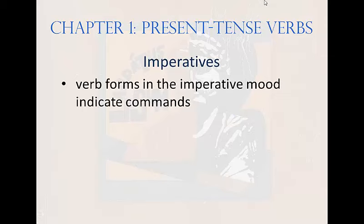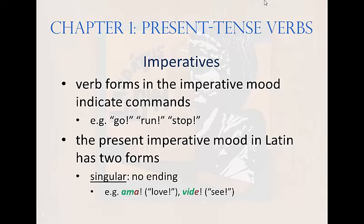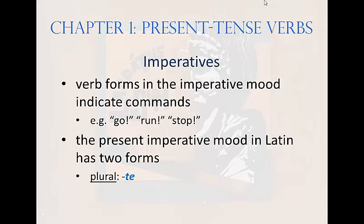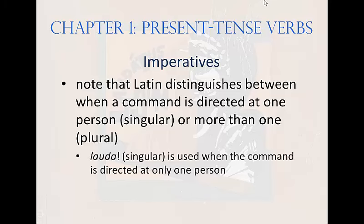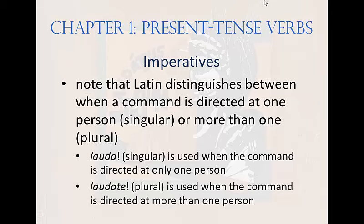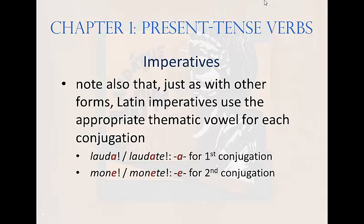Imperatives. Verb forms in the imperative mood indicate commands — for example, go, run, stop. The present imperative mood in Latin has two forms. In the singular, no ending is used — for example, 'ama' meaning love, 'vide' meaning see. In the plural, '-te' is used — for example, 'amate' meaning love, 'videte' meaning see. Latin distinguishes between a command directed at one person — imperative singular — or more than one person — imperative plural. 'Lauda' (singular) is used for one person; 'laudate' (plural) for more than one. Latin imperatives use the appropriate thematic vowel for each conjugation: A for first, E for second.